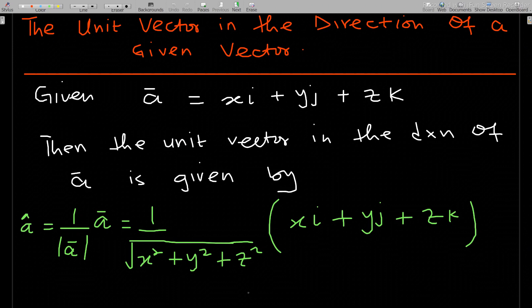Given a vector a which is written as a = xi + yj + zk, the unit vector in the direction of a is given by one over the magnitude of a, times a.